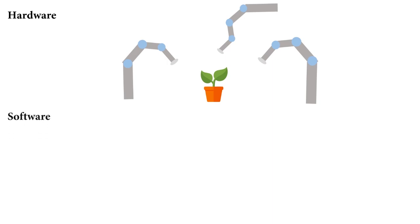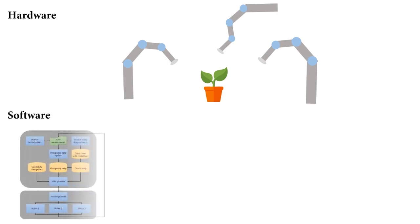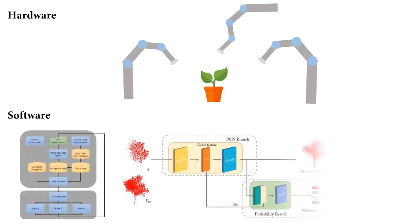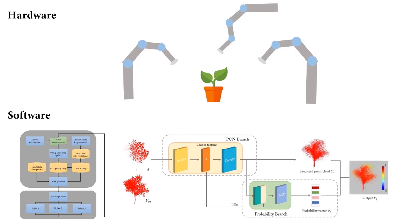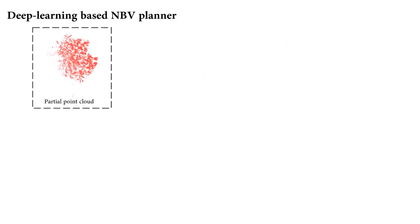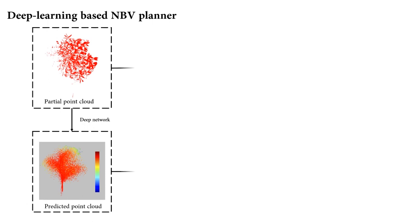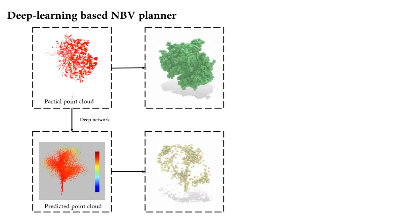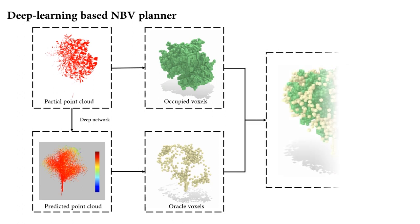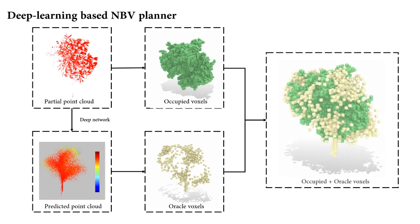To compute these viewpoints efficiently, we design a deep learning-based next-best-view planner, which is extensible to multi-robot systems. The network takes partial point clouds obtained by the sensors to predict the full point cloud with probability, which can be used to generate the oracle. Then we use the occupancy map and the oracle map to compute the next-best viewpoints.